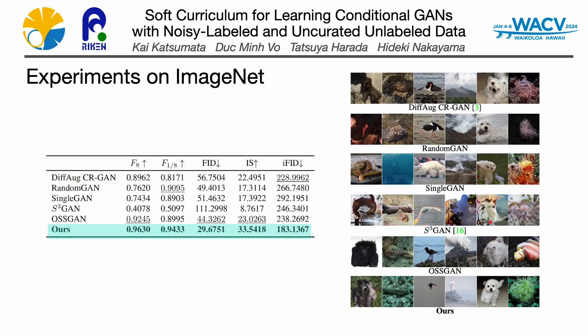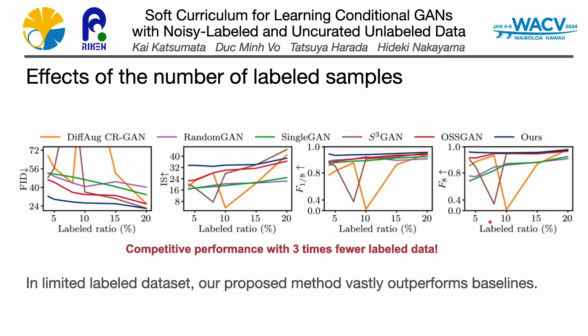Here are the experimental results on ImageNet. We compare five baseline methods against our proposed method. Our method outperforms the baselines in terms of several quantitative metrics, including class-wise metrics. Generated examples also show that our method outperforms the baselines. In experiments varying the number of labeled samples, baseline methods show a large performance gap between small and large labeled datasets. Unlike the baselines, our method achieves consistent performance even on difficult datasets — in particular, achieving competitive performance with three times fewer labeled data.